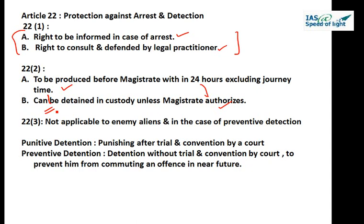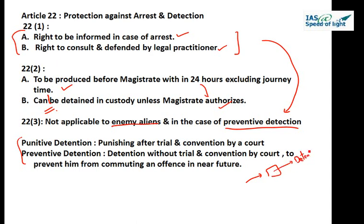Article 22 Part 3 says nothing in Clauses 1 and 2 shall apply to any person who is an enemy alien, or to any person who is arrested or detained under any law providing for preventive detention. In such cases, the above protections do not apply. The concept of punitive detention refers to detention after a fair trial and conviction by a court. Preventive detention means detention without trial and conviction, to prevent a person from committing an offense in the near future.